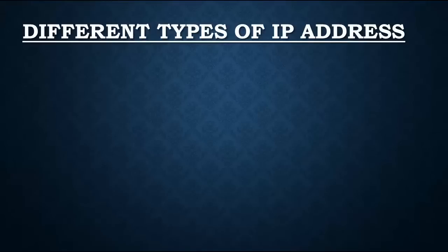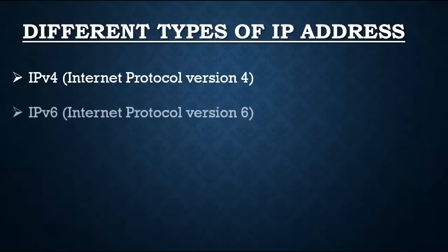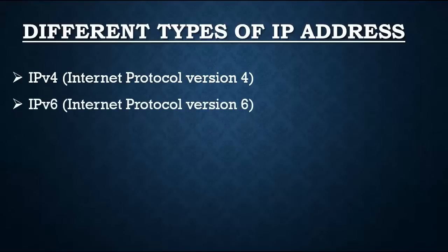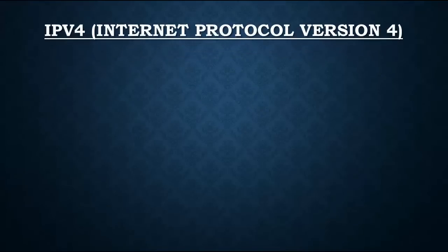There are two types of IP address. The first is IP version 4, which is also called Internet Protocol version 4, and the next is IP version 6, which is also called Internet Protocol version 6. In this chapter we are going to discuss only on IP version 4; about IP version 6 I will discuss in the next chapter.